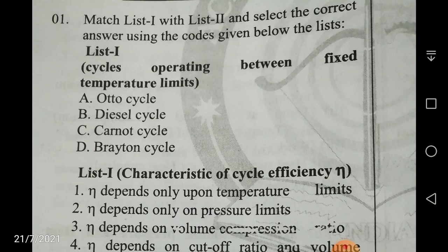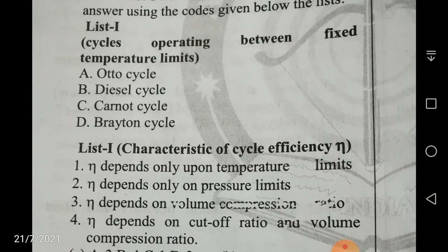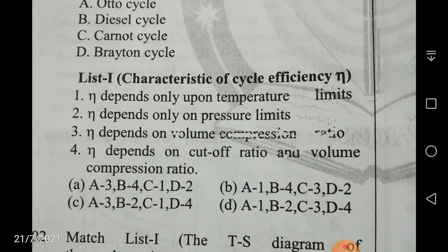Match list one with list two and select the correct answer using the codes given below. The cycles operating between fixed temperature limits are given as: Otto cycle, Diesel cycle, Carnot cycle, and Brayton cycle. You have to match these cycles with the characteristics of cycle efficiency. The first characteristic is: efficiency depends upon only temperature limits.